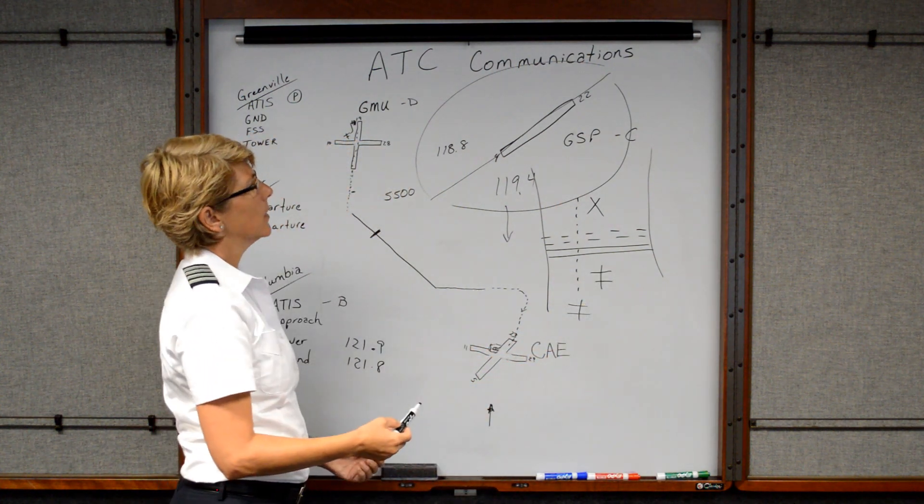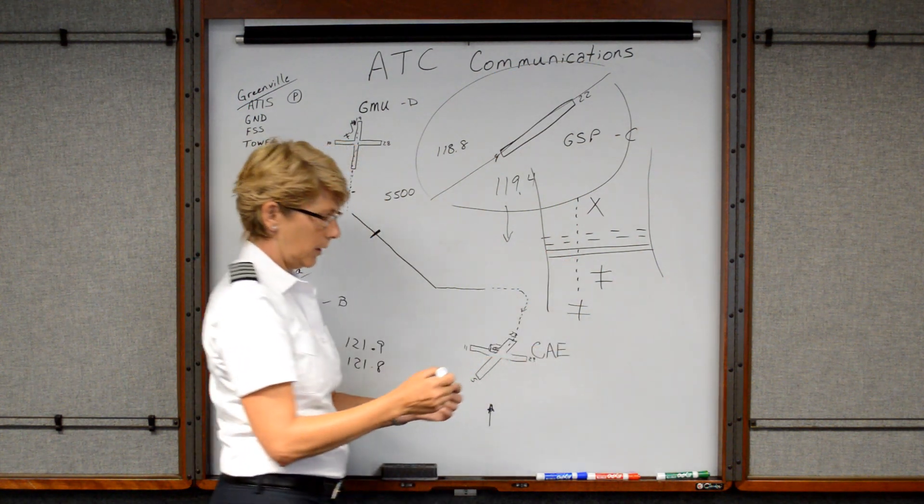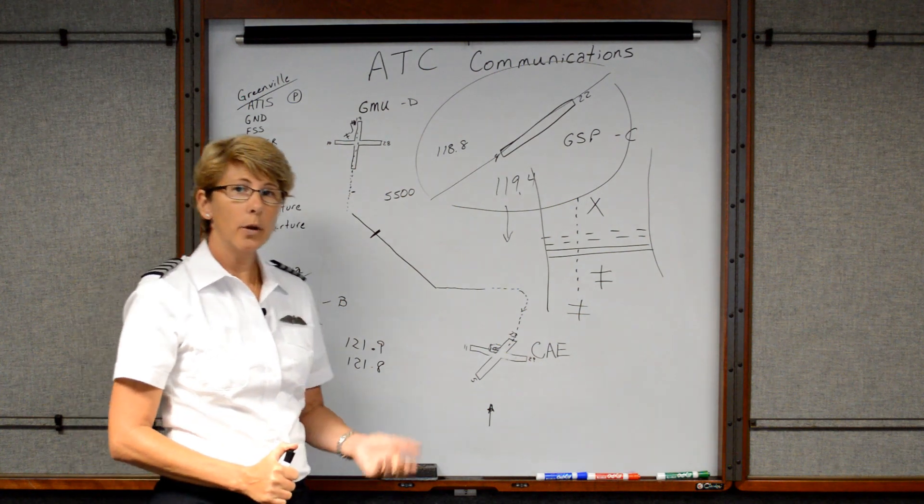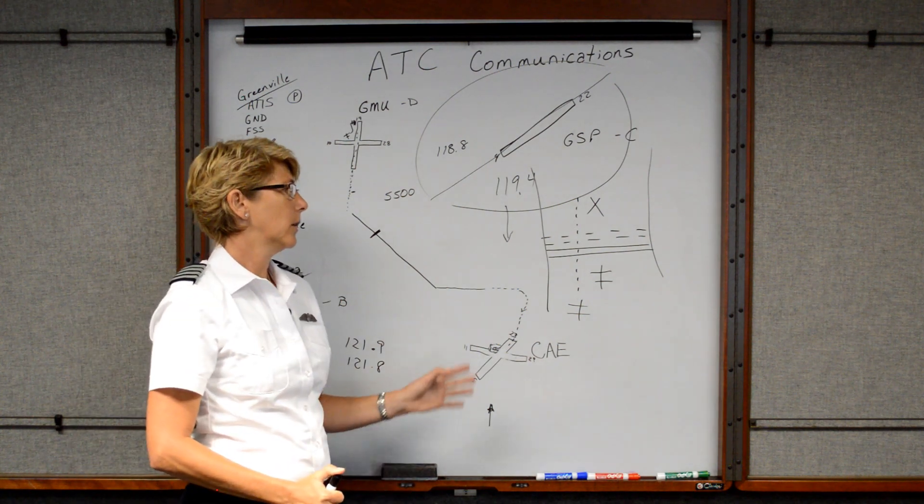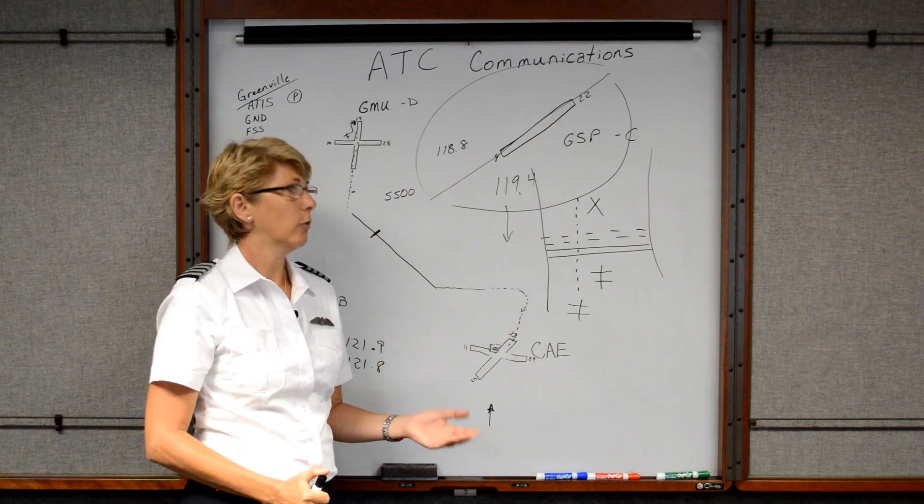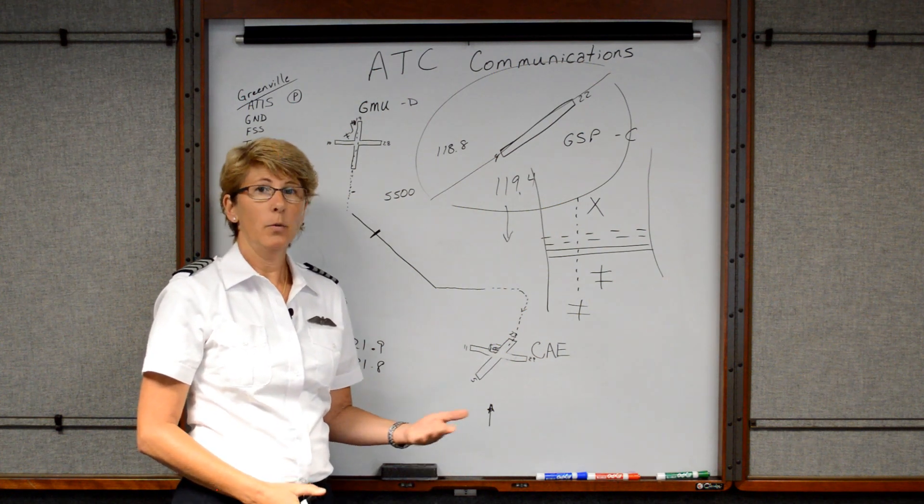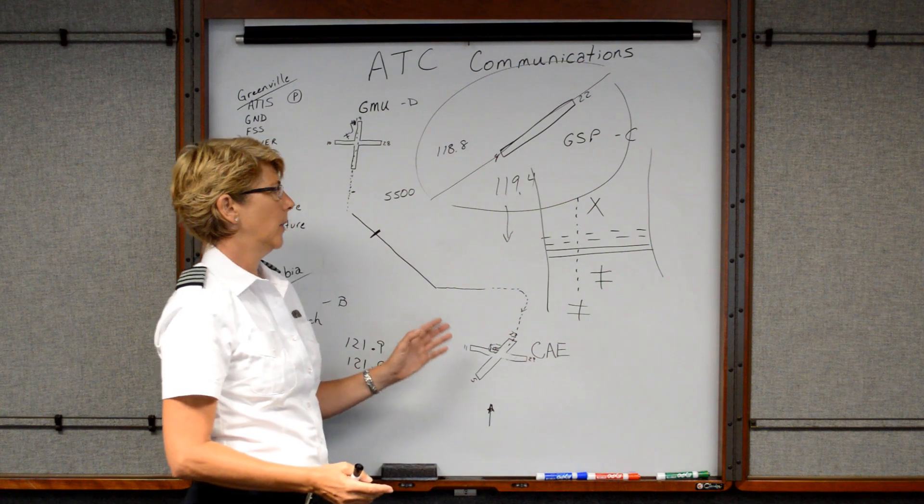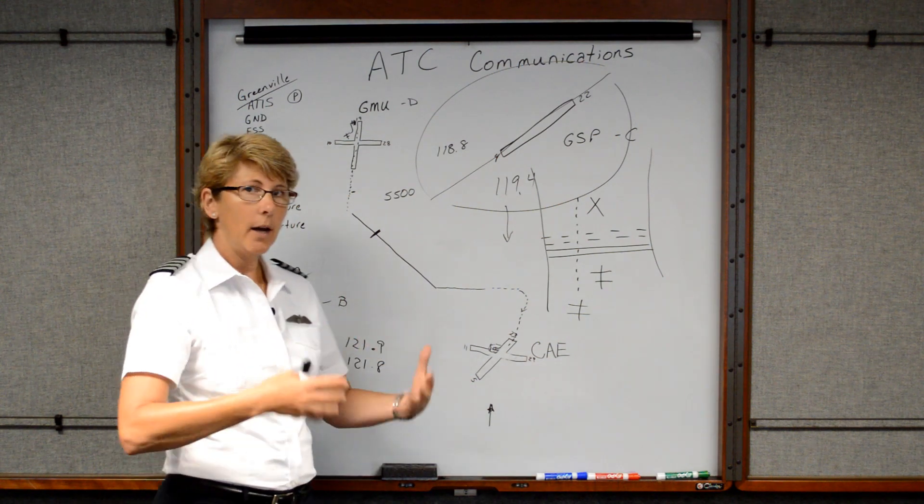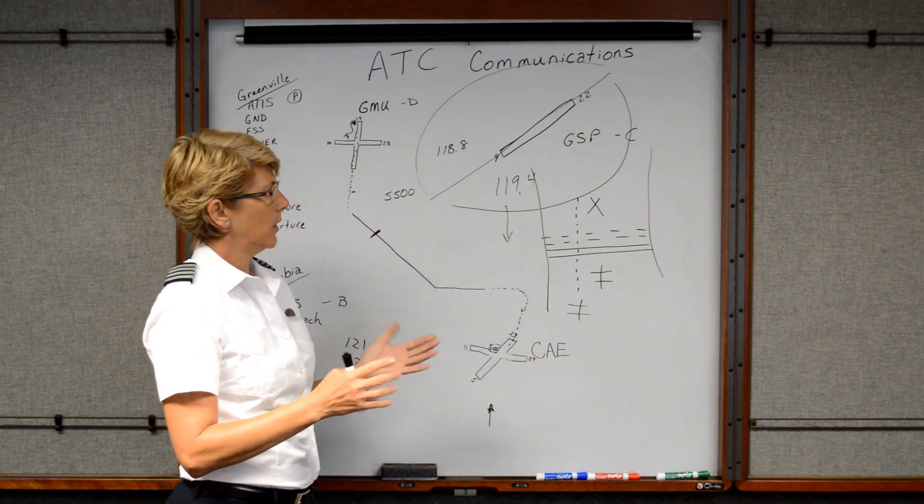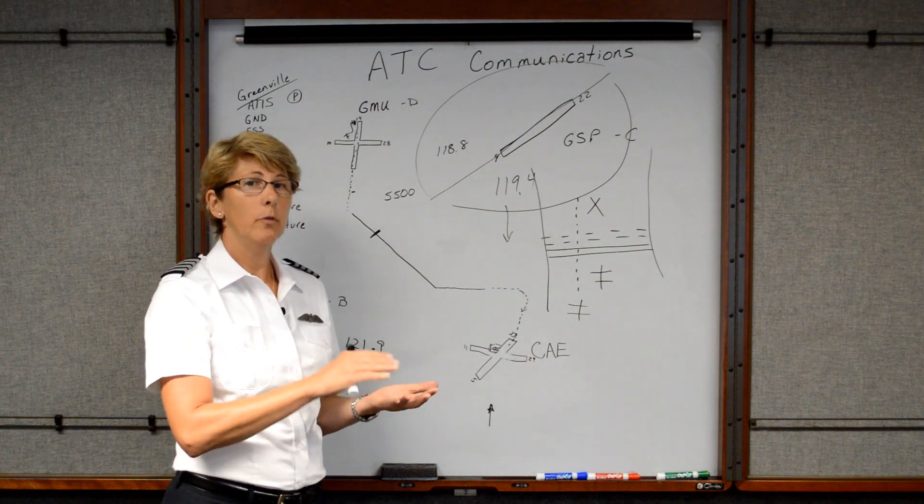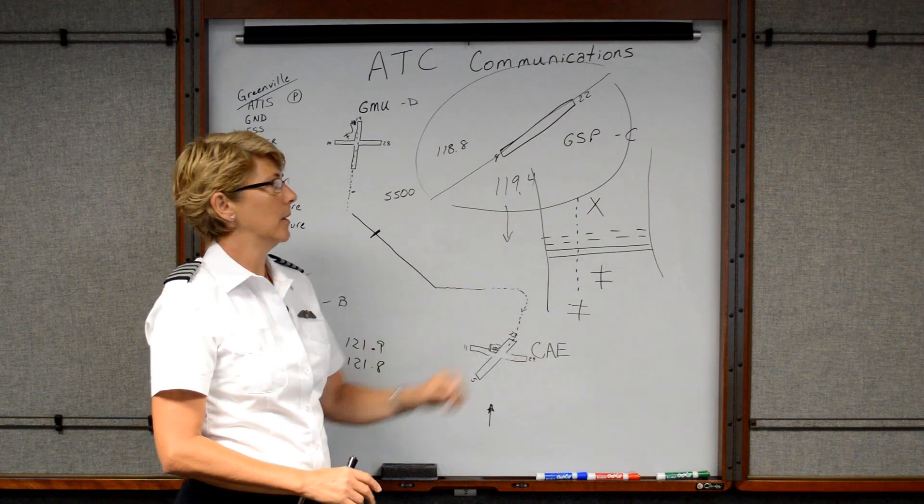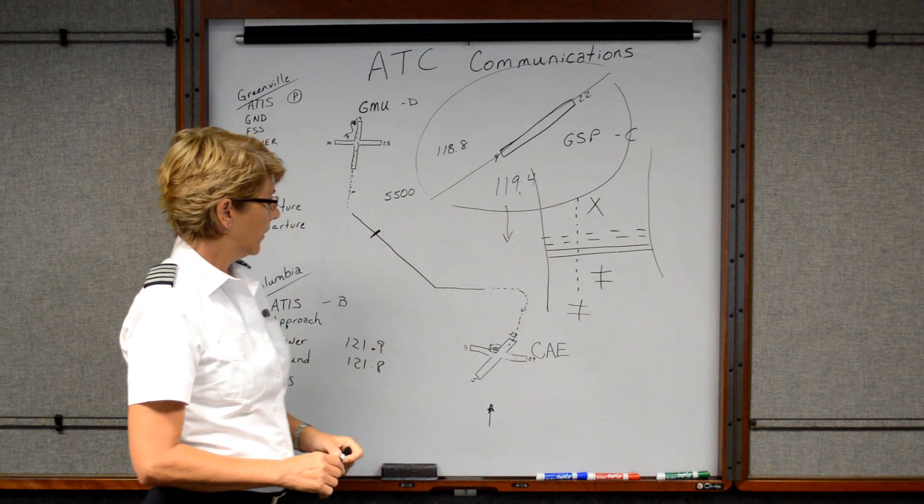So what is it called if we cross over the hold short line without permission at a control tower airport? It's called a runway incursion. So runway incursions are a really big problem and unfortunately it's a very big problem even with airliners because runways can be very confusing and there's a lot going on. You're really busy. So be sure that you have a current airport diagram. Be sure you review that airport diagram. Be sure you understand what the airport markings mean so you don't get in any trouble.